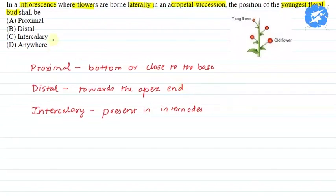Now let's look at inflorescence where flowers are born laterally in an acropetal succession. This type of inflorescence we call racemose inflorescence. In this case,